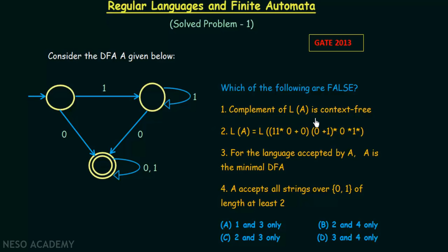The first statement says the complement of LA is context-free. This is a DFA, so it can be expressed using a regular language. We know that the complement of every regular language is also a regular language. Furthermore, every regular language is also context-free, though not vice versa. So since this is regular, it is also context-free. And since the complement of every context-free language is also context-free, statement 1 — which says the complement of LA is context-free — is true.